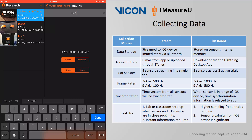Stream will send data directly to the iOS device via Bluetooth. The data can then be exported from the iOS device via email or through iTunes. Synchronized data can be recorded at 500 Hz for 3 axes and 100 Hz for 9 axes. As such, the typical use case is for lab or classroom settings where the sensors and iOS device are in close proximity, or where instant information is required.